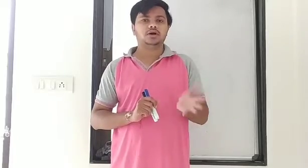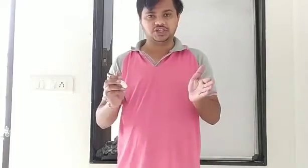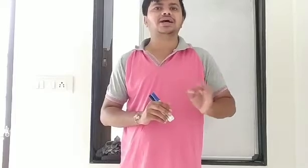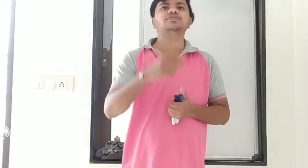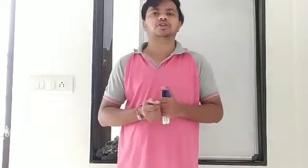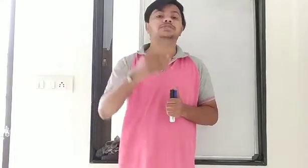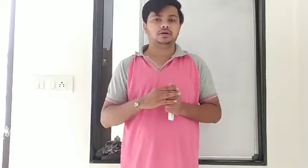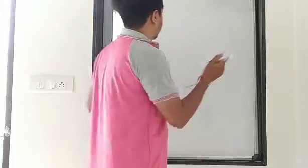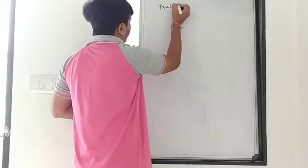So, these are two types of defects: near-sightedness and far-sightedness. But there is another defect of vision in which you can't see objects in a broader range — meaning objects that are both far from you and near to you. This type of defect is known as presbyopia.